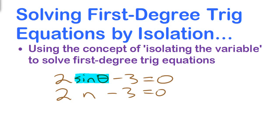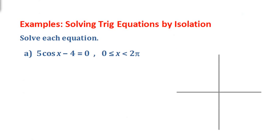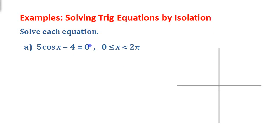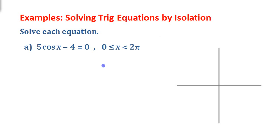Just see that trig function, treat it like a single variable and isolate it. So first we'll tackle this equation: 5 cos x minus 4 equals 0. We need to solve it over this specified domain, where x can be values between 0 and 2 pi.